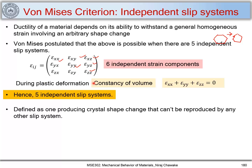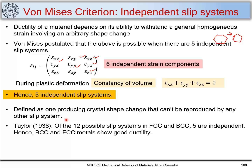An independent slip system is defined as one producing a crystal shape change that cannot be reproduced by any other slip system. When Taylor calculated, out of 12 possible slip systems for FCC and BCC, five are independent, and hence FCC and BCC metals show good ductility. We need five independent slip systems to accommodate any arbitrary shape change — that is the Von Mises criterion — and FCC and BCC crystal structures satisfy this criteria.